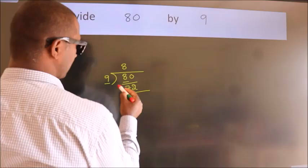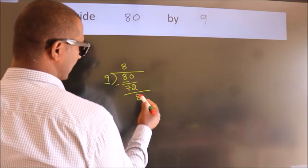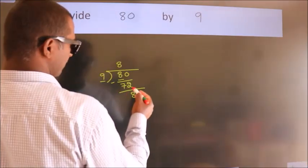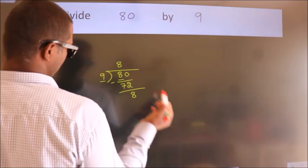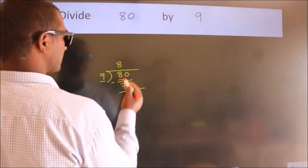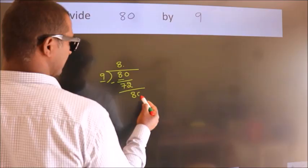Now, we should subtract. We get 8. After this, no more numbers to bring it down. So, what we do is, we put dot take 0.